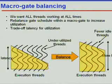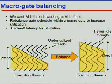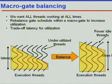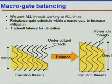How do we balance the micro gates? We want all threads working at all times, so we need to rebalance the schedule within a micro gate to increase utilization — this is a trade-off of latency for utilization. After balancing, we make sure that we have fewer idle threads in each micro gate.